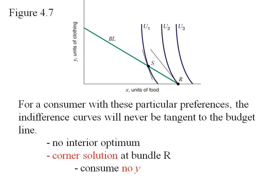Instead we're going to have something called a corner solution. In this case at bundle R where we're consuming no Y at all. We're spending all of our income on good X.